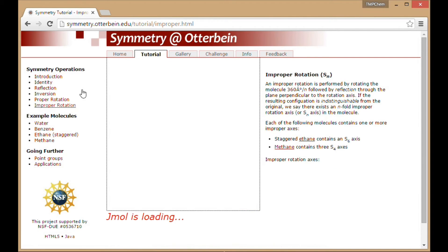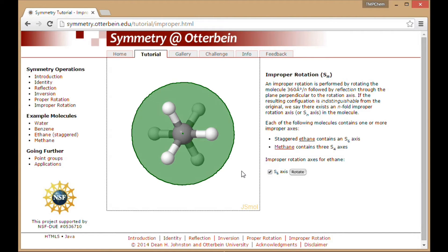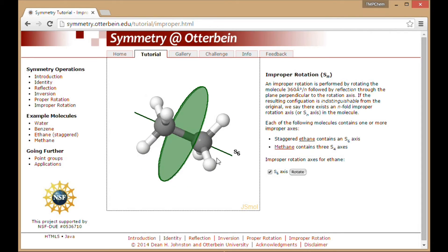And lastly, the most complicated one, as it seems, is going to be improper rotation. So staggered ethane specifically in this staggered configuration has an S6 axis. So it's going to be a rotation by 60 degrees, 360 over six, and then a reflection through this mirror plane which is perpendicular to this S6 axis.